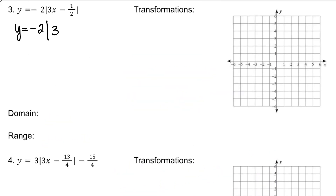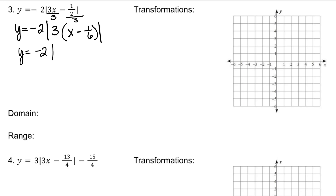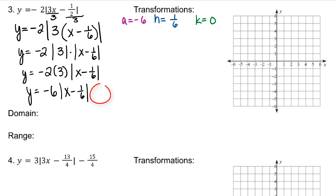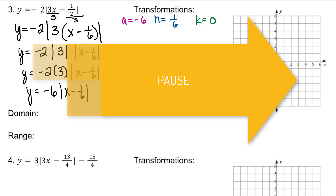Let's try another one. Factor out the coefficient of X. When you factor out a 3, you're dividing each term by 3. When you divide 1/2 by 3, that is the same as multiplying it by 1/3. Continue simplifying. Let's determine A, H, and K to get your transformations. In this case it's x minus H, so H is simply 1/6. Because we have no value being added outside, K our vertical shift is 0. Go ahead and pause the video, write out the transformations and graph yourself, then determine the domain and range, and press play to check your work.